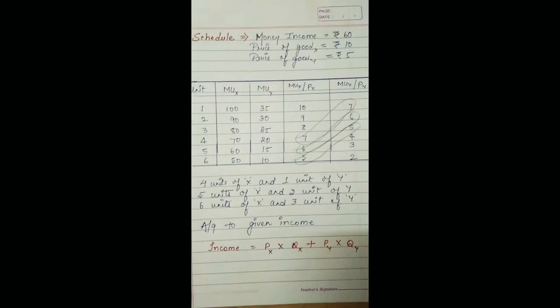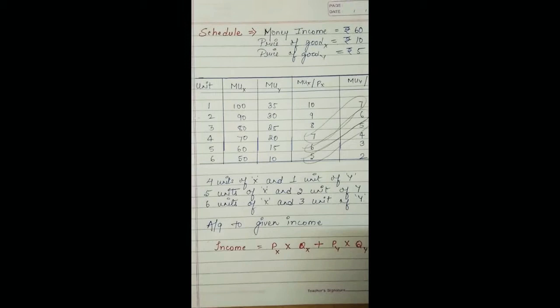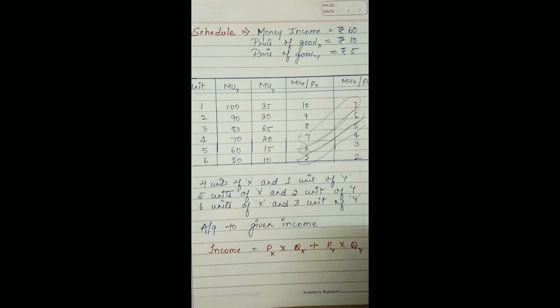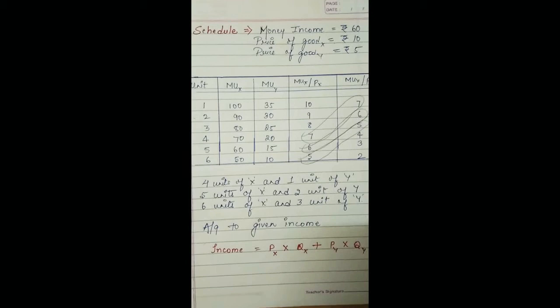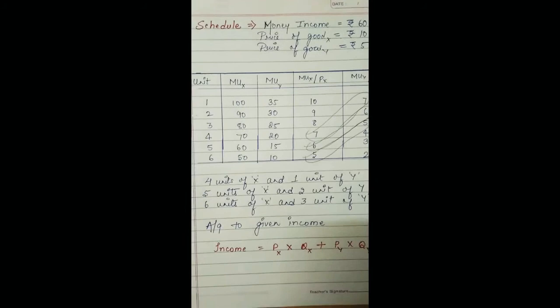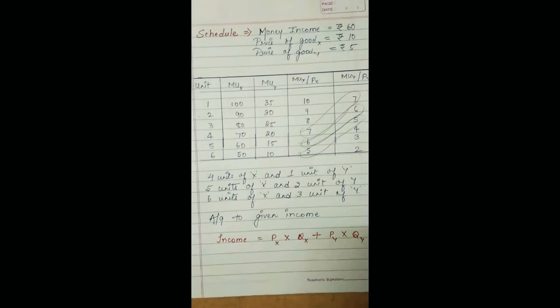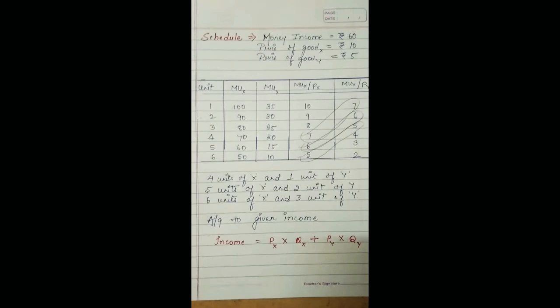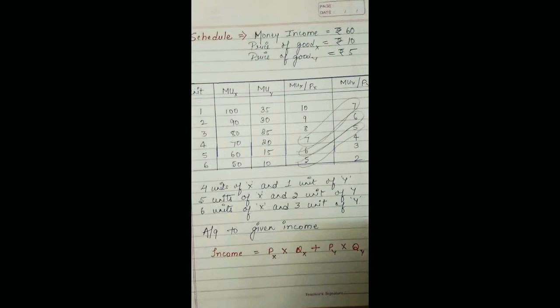According to the Law of Diminishing Marginal Utility, as we go on increasing our consumption the satisfaction derived from the commodity goes on declining. When you are very hungry you consume the first unit and derive maximum satisfaction of 100. After that your satisfaction level decreases: MUx is 90 on the second unit, 80 on the third, 70 on the fourth, 60 on the fifth, and 50 on the sixth.